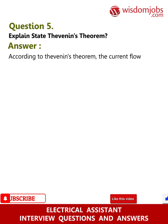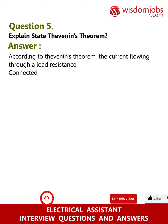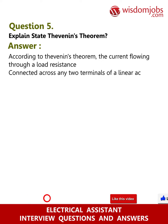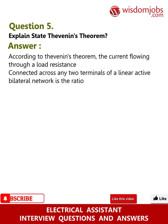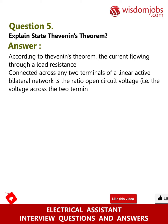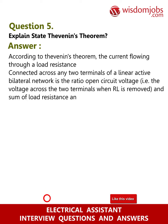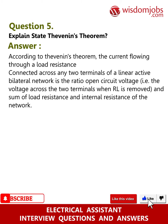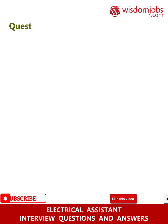Question 5: Explain Thevenin's theorem. Answer: According to Thevenin's theorem, the current flowing through a load resistance connected across any two terminals of a linear active bilateral network is the ratio of the open circuit voltage — i.e., the voltage across the two terminals when RL is removed — and the sum of load resistance and internal resistance of the network. It is given by Voc / (Rth + RL).